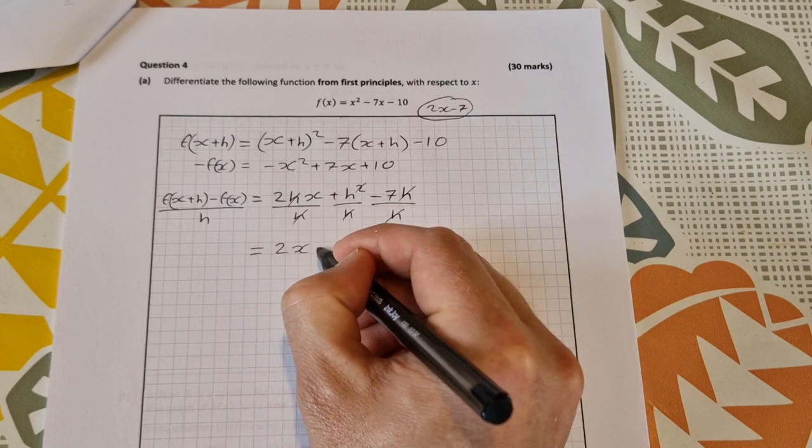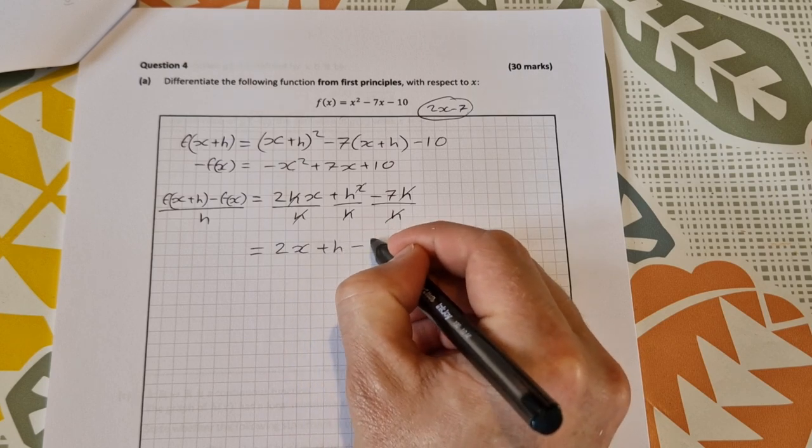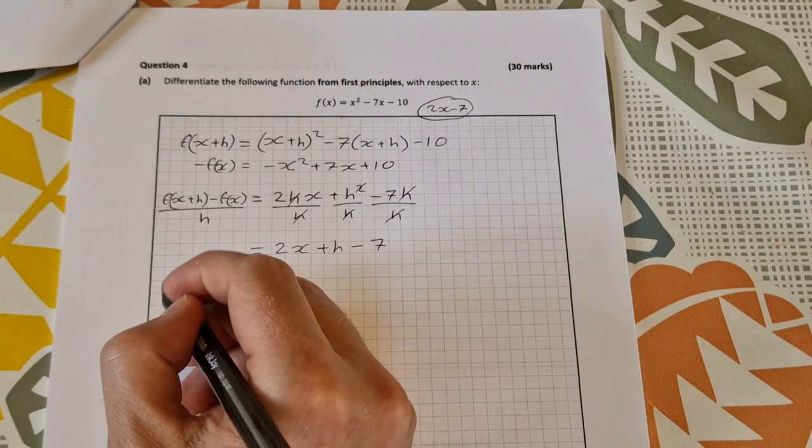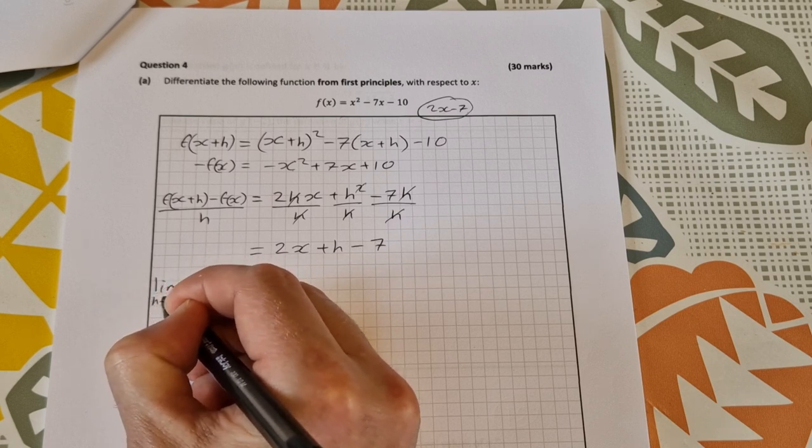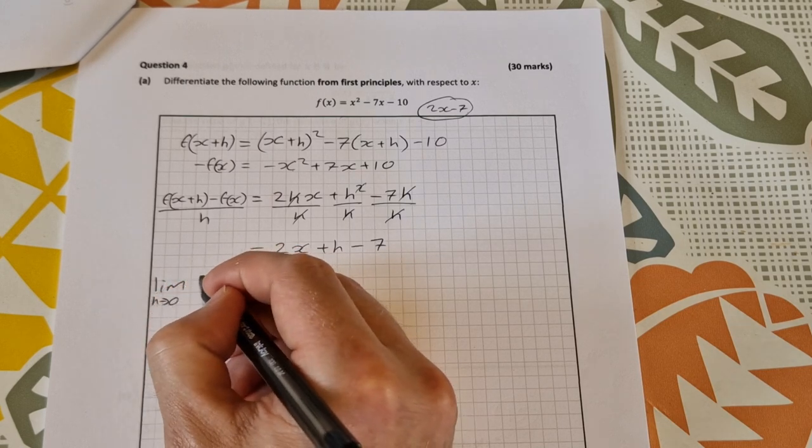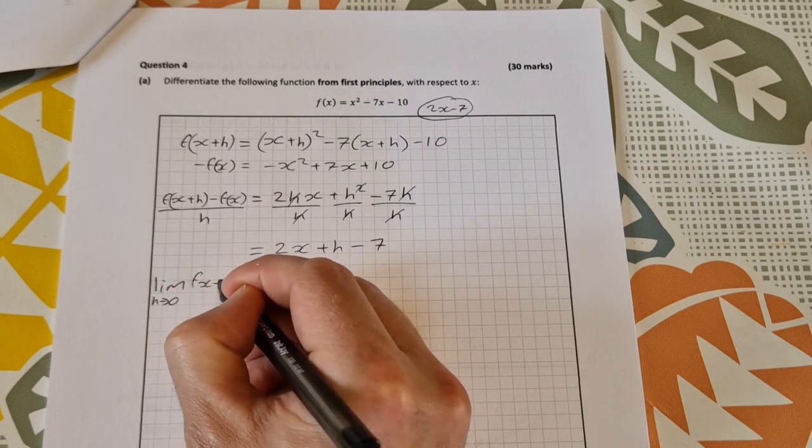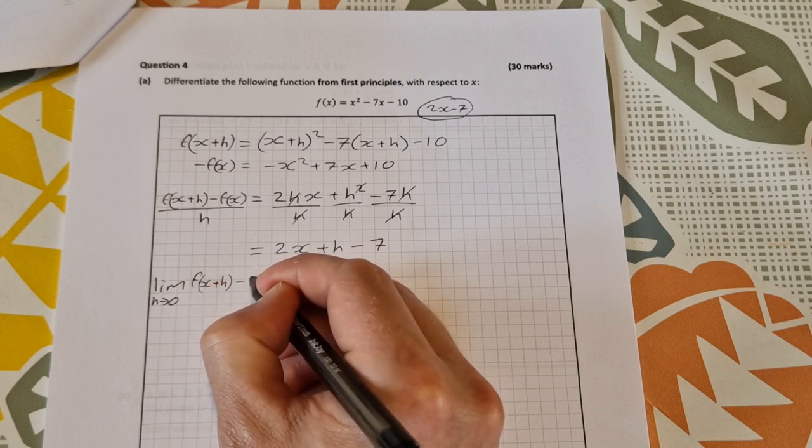The limit as h goes to 0 of [f(x+h) - f(x)]/h equals 2x + 0 - 7.